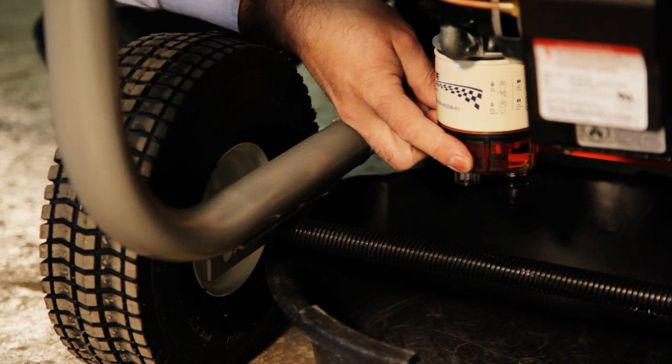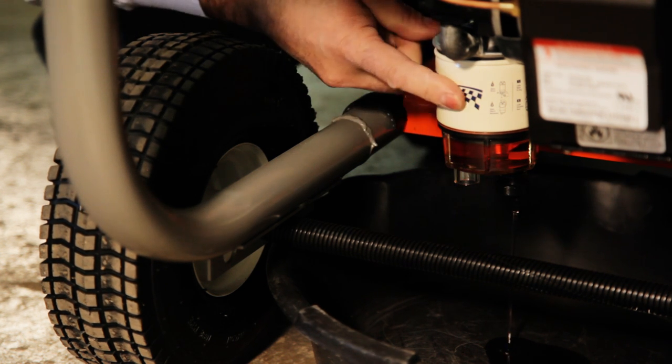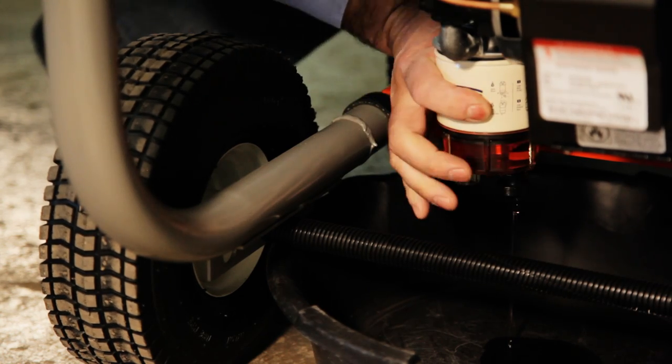First, you're going to drain the fuel and to do that you unscrew the petcock or the fuel drain. Then you unscrew the cartridge from the housing.